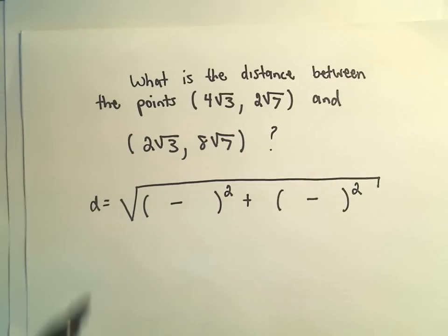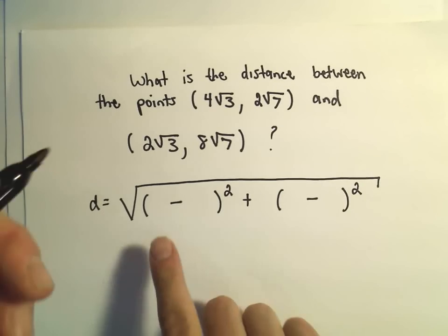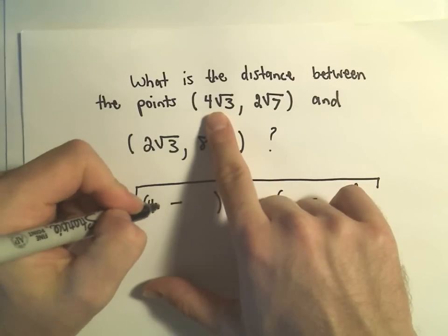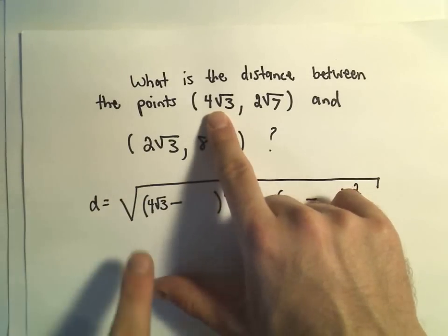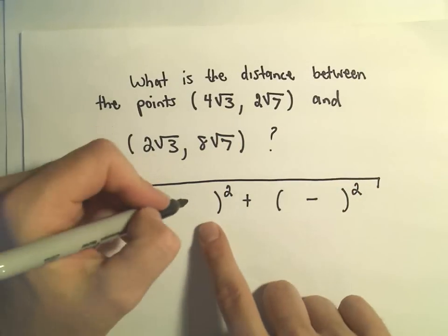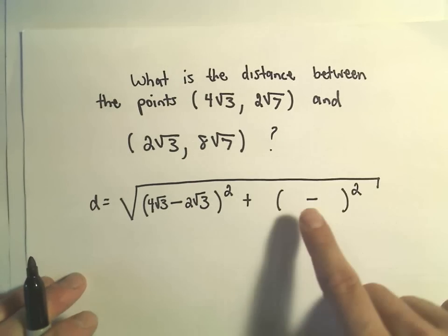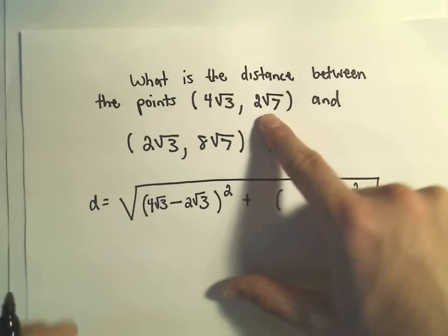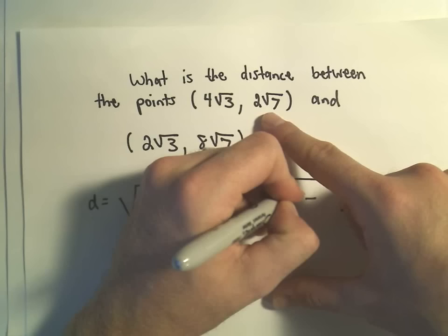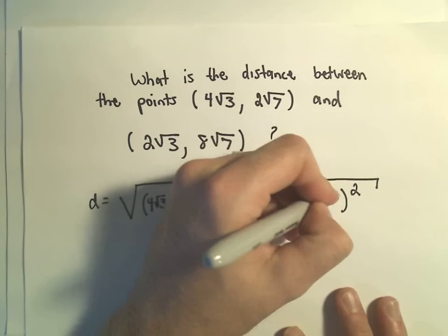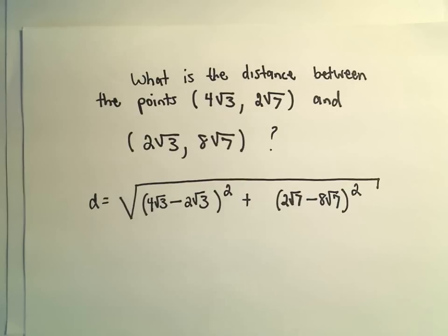All we do is we just take the x-coordinates, so the first one I'm going to use is 4 root 3, and the second x-coordinate is 2 root 3, and then we do the same thing with the y-coordinates. So, 2 root 7 minus 8 root 7, and now this is what I have to simplify down a little bit.